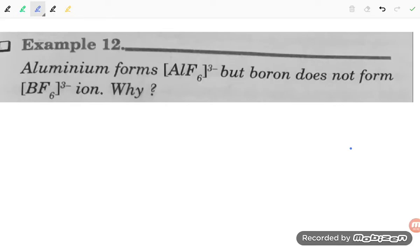Hello students, let us try to solve one more problem from p-block elements. If you find this video helpful, please like and subscribe. Example number 12 from NCERT: Aluminum forms [AlF6]³⁻ but boron does not form [BF6]³⁻. Why?